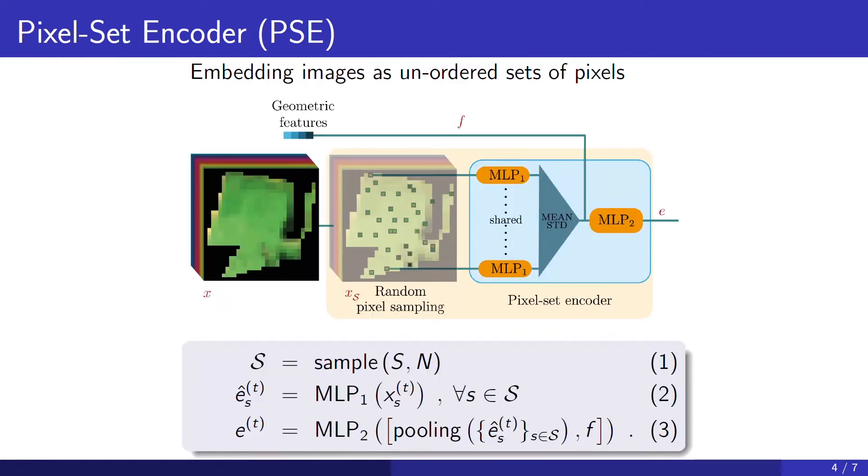We start with the pixel set encoder. This module implements the simple idea that if the images don't have that much texture, we might as well consider them as unordered sets of pixels. To do so, we start by randomly sampling a fixed number of pixels from the input image, and then process those pixels with a shared MLP MLP1. We pool the resulting vectors on the pixel axis of dimension S, and finally process the pooled vector with a second MLP MLP2 to produce the embedding of the image. We simply concatenate some geometric features about the parcel's shape before the second MLP. In short, this module can be seen as a PointNet network adapted for coarse resolution images.